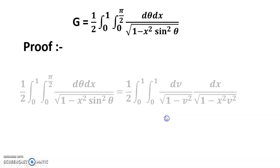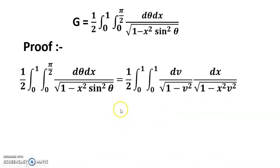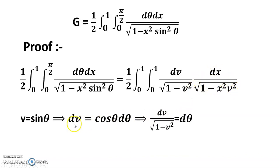Now the proof. The expression one-half times the integral from 0 to 1 and 0 to pi/2 of d-theta divided by the square root of 1 minus x-squared sin-squared theta can be rewritten. Using the substitution v equals sin theta, we get dv equals cos theta d-theta, so d-theta equals dv divided by the square root of 1 minus v-squared, since cos theta equals the square root of 1 minus sin-squared theta equals the square root of 1 minus v-squared.